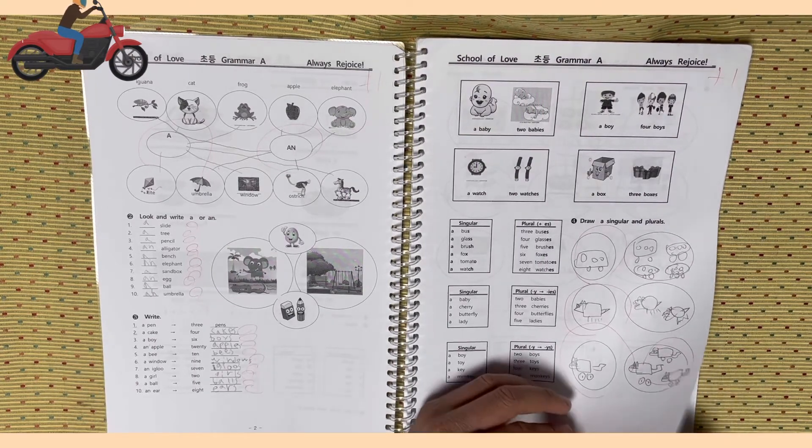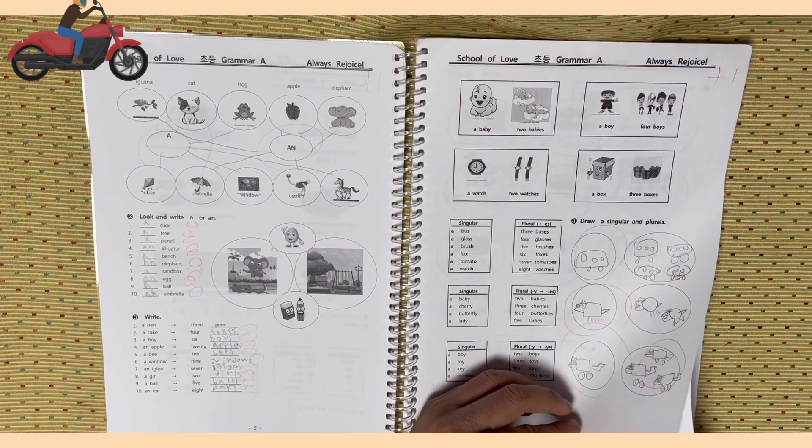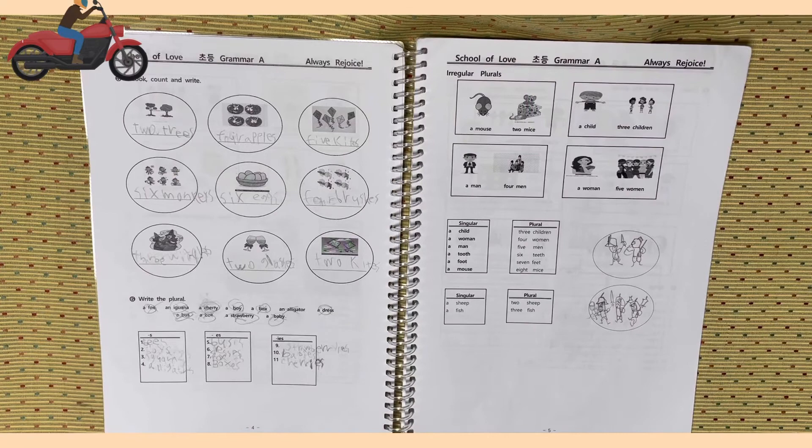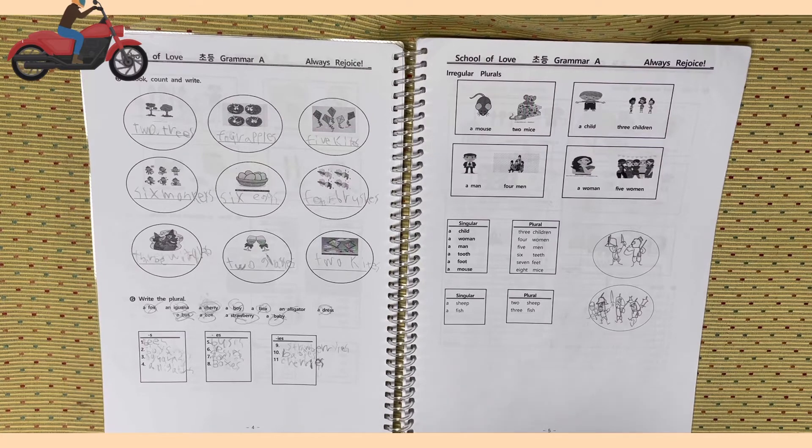Draw a singular and plural. Look, count, and write. 보고 맞는 단어 숫자와 단어 복수형을 쓰면 됩니다. Activity six. Write the plural. A fox, an iguana, a cherry, a boy, a box, an alligator, a dress, a bus, a bee, a strawberry, a baby.